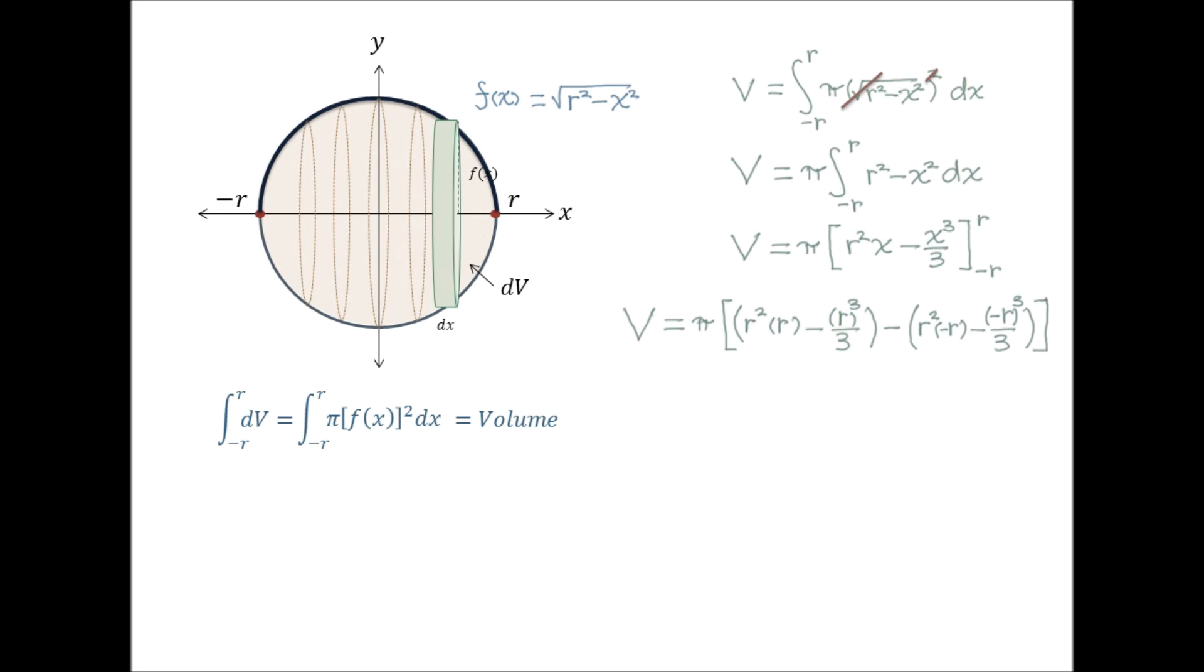Distributing the negative in r squared times negative r and negative times the quantity negative r cubed over 3, and seeing that the quantity negative r cubed is simply just negative r cubed, we then get volume equal to pi times the quantity r cubed minus r cubed over 3, minus negative r cubed, plus negative r cubed over 3.